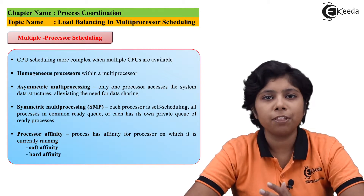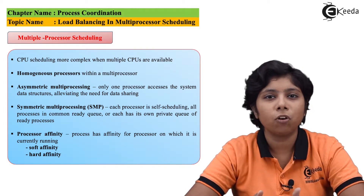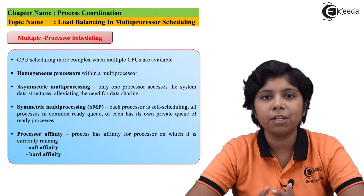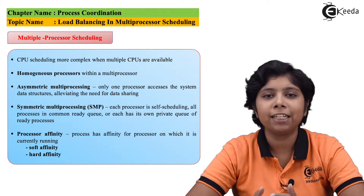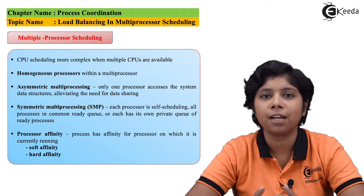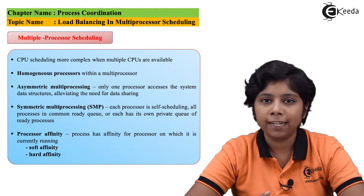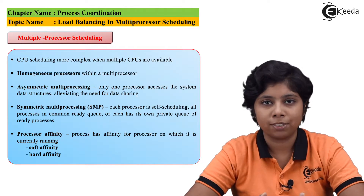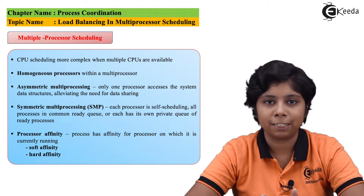If the processors share a common run queue, then load balancing is not that necessary, because if a processor becomes idle it can simply extract any waiting process from the thread pool and execute it. Thus load balancing becomes an overhead in this type of system.